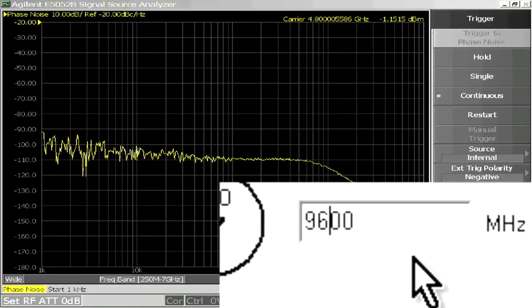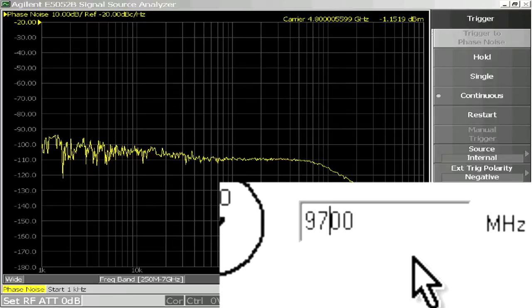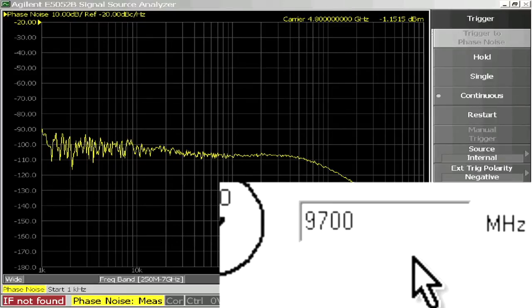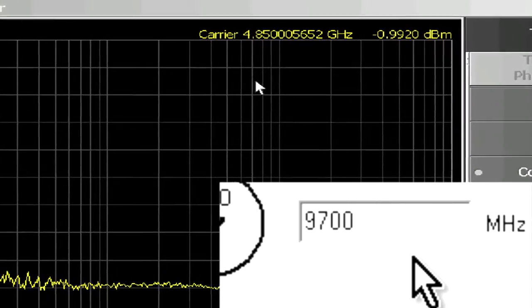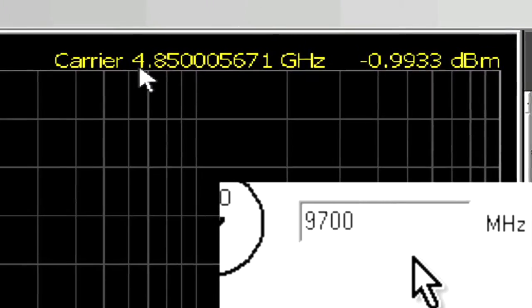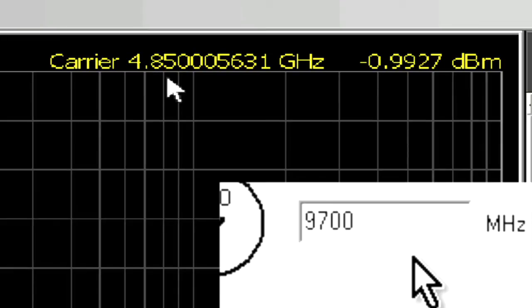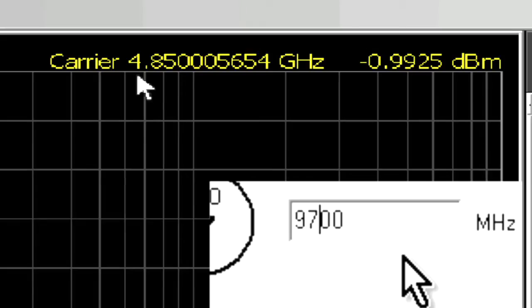Here I'm going to change the VCO frequency from 9.6 to 9.7 GHz. If I move to the signal source analyzer, I can see that the carrier is now at 4.85 GHz, which is half of the 9.7 GHz that I just set. Let me put it back to 9.6 GHz. And we can see that the carrier moved back to 4.8 GHz.